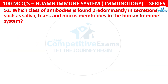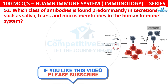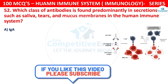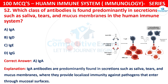Question number 52. Which class of antibodies is found predominantly in secretions such as saliva, tears, and mucous membranes in the human immune system? The options are IgA, IgD, IgE, or IgG. The correct answer is A, that is IgA. IgA antibodies are predominantly found in secretions such as saliva, tears, and mucous membranes, where they provide localized immunity against pathogens entering through mucosal surfaces.